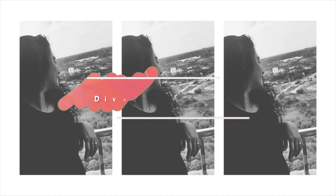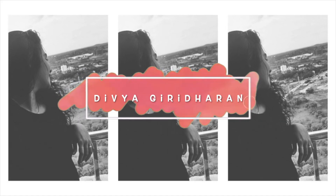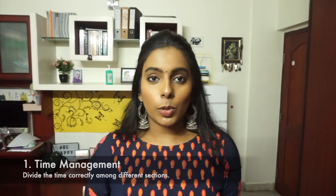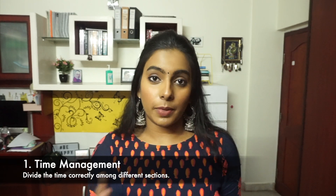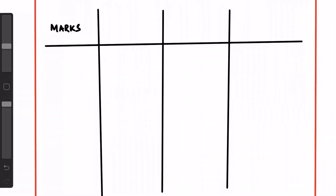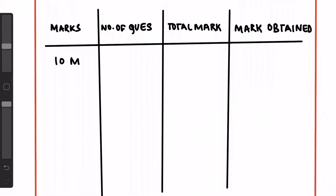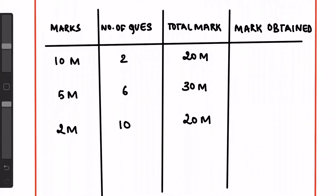The first most important thing we have to understand is time management. It's a 70-mark paper divided into 10 markers, 5 markers, and 2 markers. Usually we have two 10 markers, eight 5 markers, and ten 2 markers.